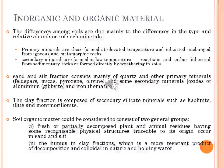Soil organic matter consists of two general groups. The first is fresh or partially decomposed plant and animal residues having some physical structure traceable to their origin. The second is humus, the most resistant product of decomposition and colloidal in nature. It is the black or brown color usually observed in the surface layers of the soil. Humus is the most active part of organic matter; its capacity to hold water and nutrients greatly exceeds that of clay. Fresh residues occur in the sand and silt fraction, while humus occurs in the clay fraction.